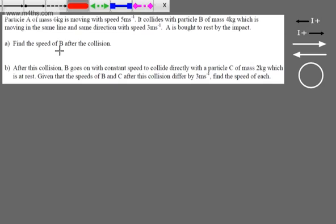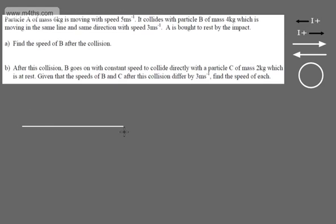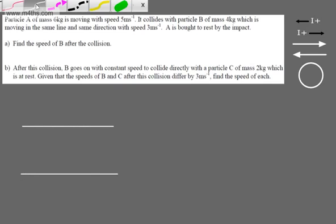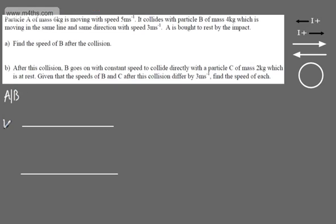Let's start with the first collision between A and B. We'll model this up with a before and an after shot. So writing this on, this is A and B — we've got this collision, with a before and an after.